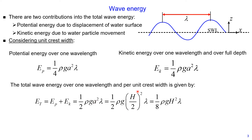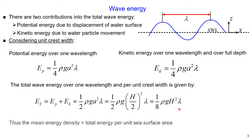Substituting amplitude as wave height divided by 2, we get the equation for the total wave energy over one wavelength per unit crest width as 1/8 multiplied by specific weight, multiplied by wave height squared, multiplied by wavelength. The mean energy density equals total energy per unit sea surface area, so dividing by lambda gives: total energy per unit sea surface area equals 1/8 multiplied by specific weight multiplied by wave height squared.